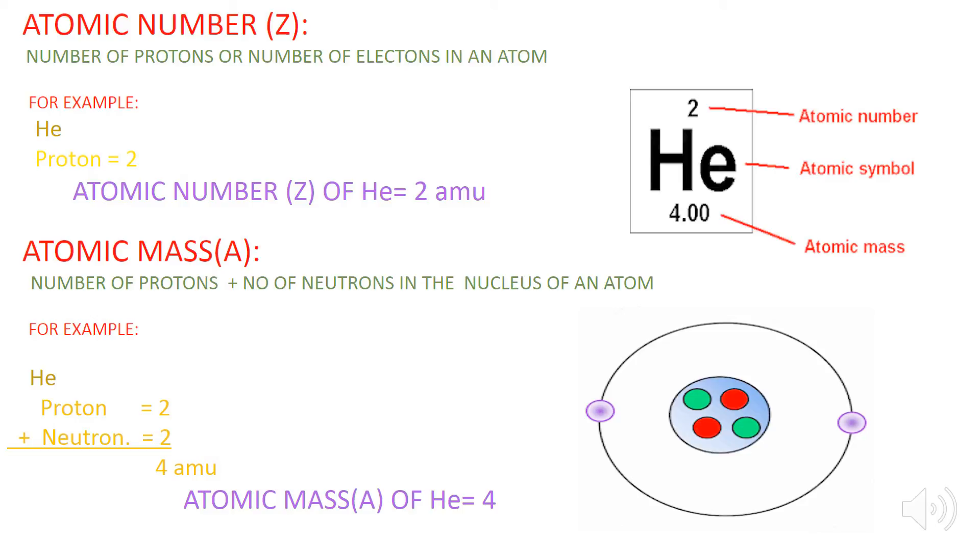Here in the helium atom we have two protons and two neutrons, so the total number is 4. Therefore, the atomic mass of the helium atom is 4.